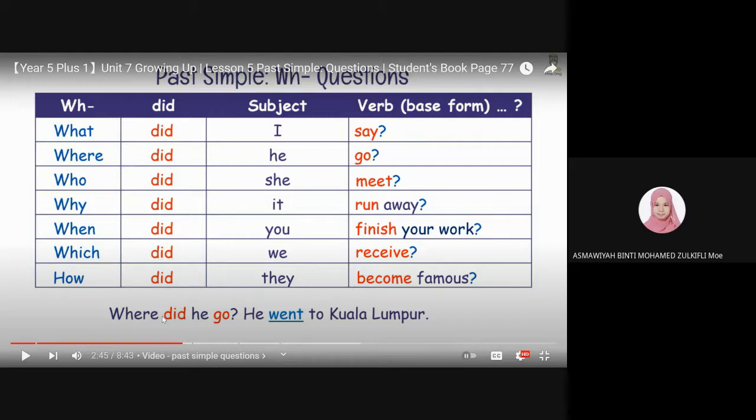You have to know lah. Kalau soalannya dalam past tense, the answer obviously should be in past tense too. Okay. Where did he go? Did ni menunjukkan soalan tu adalah dalam past tense. So, you should use past tense for the answer. He went to Kuala Lumpur.